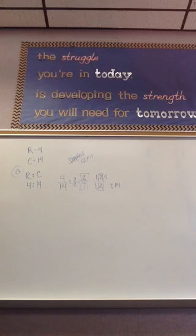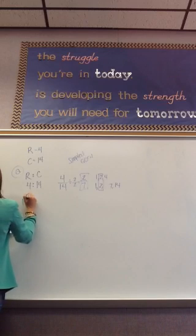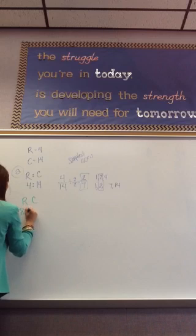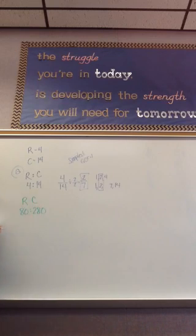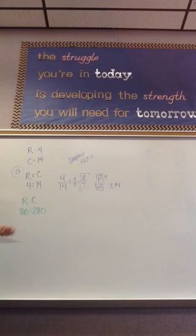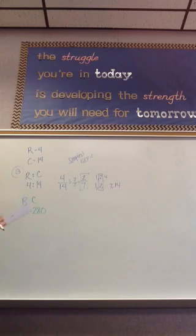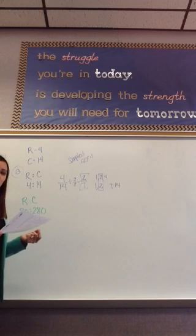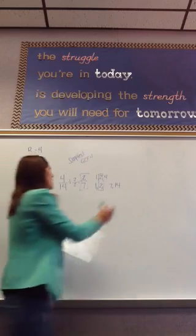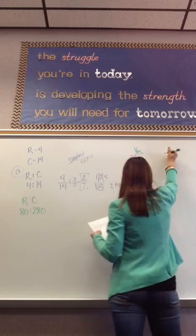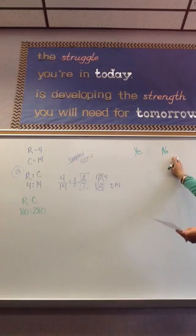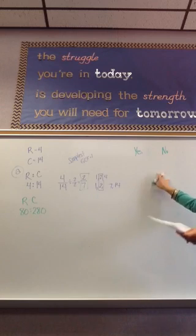Part B says: when Tavon completed all of his training, the ratio of total miles ran to total miles cycled was 80 to 280. Is this consistent with Tavon's training schedule? This part can trick us — we want to jump into the math, but we must answer the question being asked. There are only two possible answers: yes, it is consistent, or no, it is not. Your answer should start with yes or no.